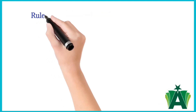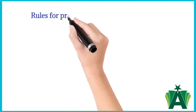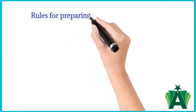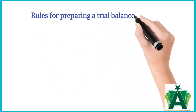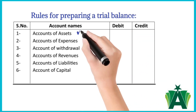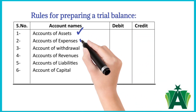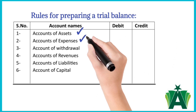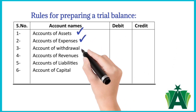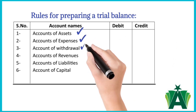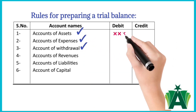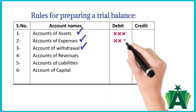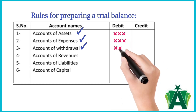There are some sets of rules for a trial balance. Normal balances of various accounts are: accounts of assets, accounts of expenses, and an account of withdrawal normally have debit balances and are recorded in the debit column of the trial balance.